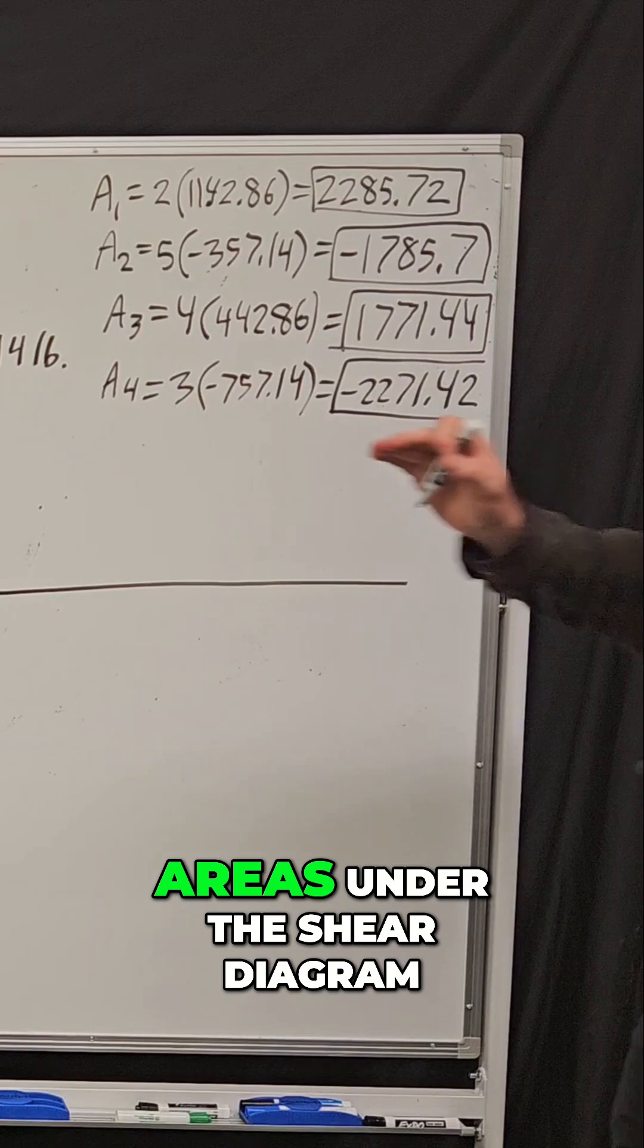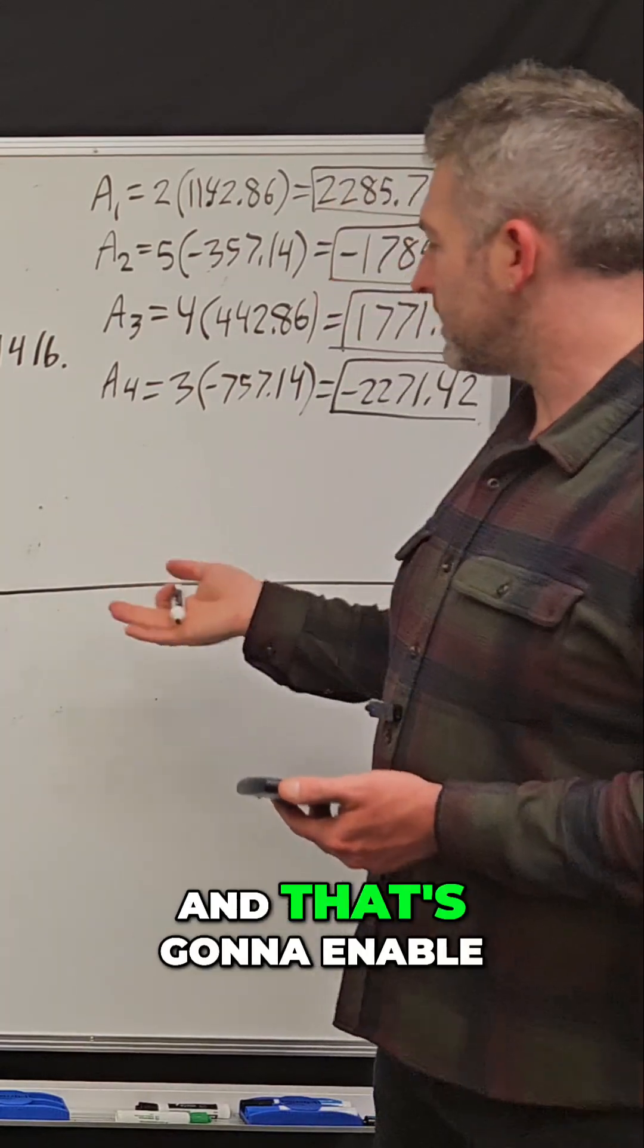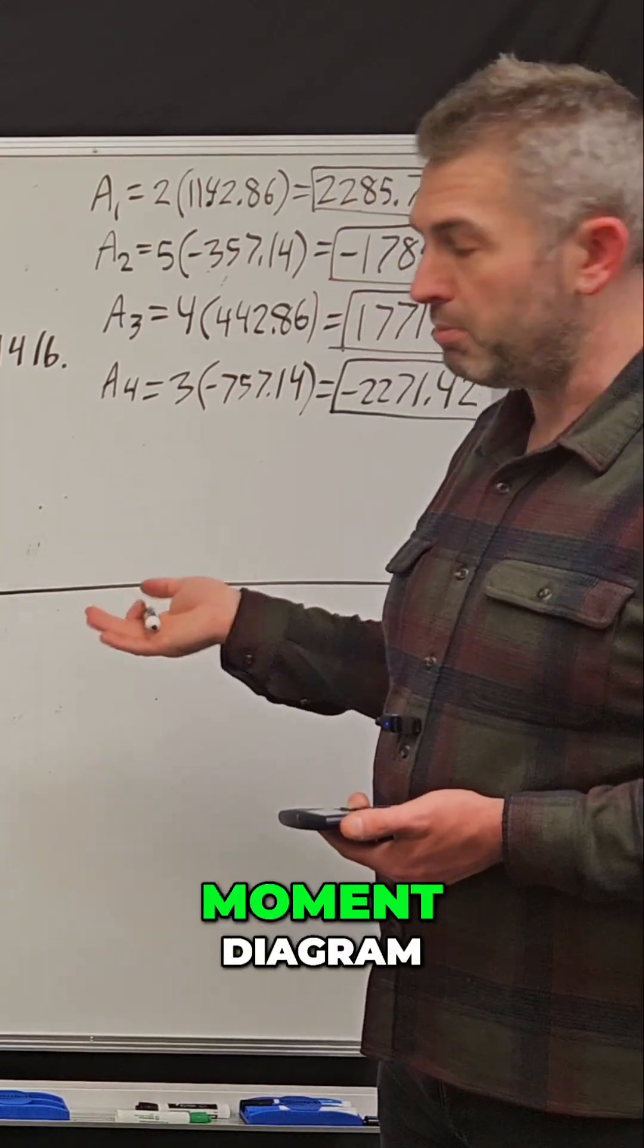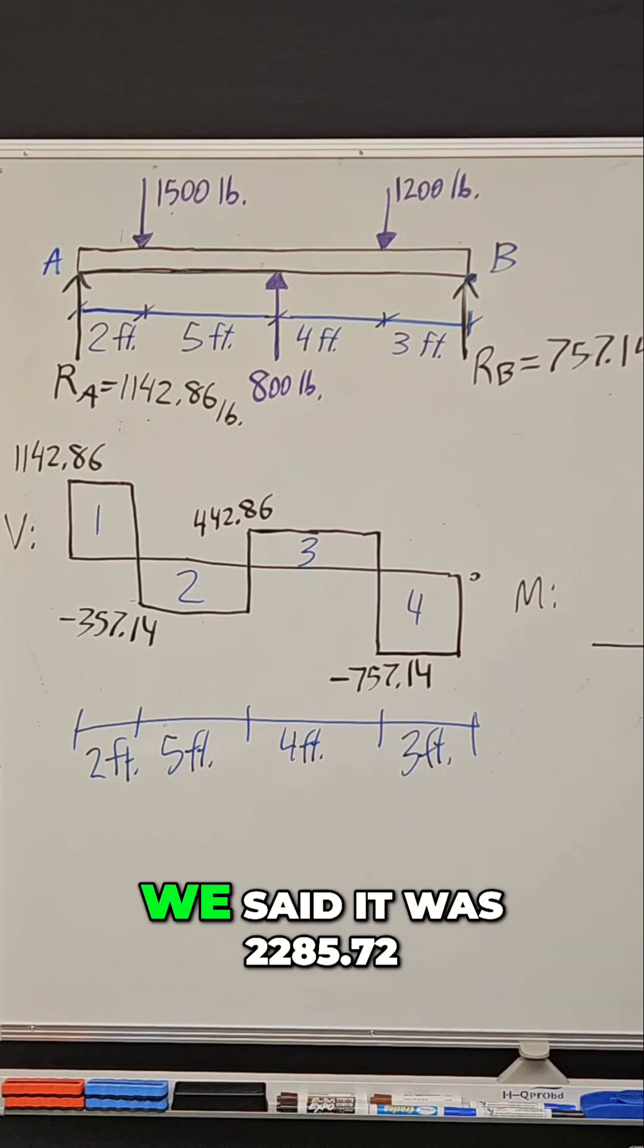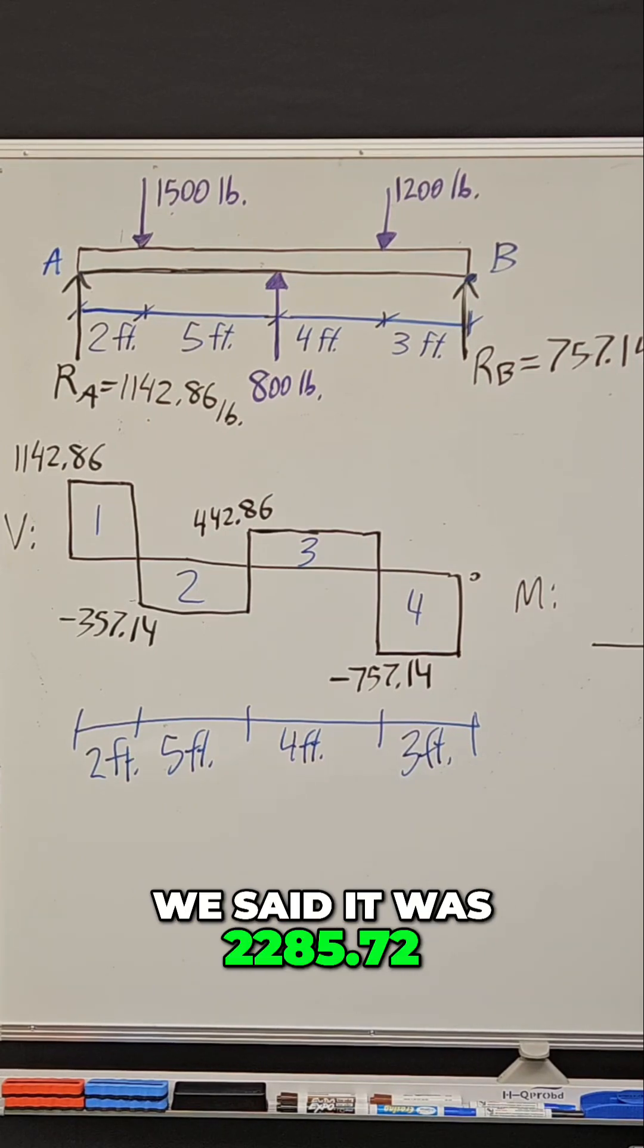So now we have all four of the areas under the shear diagram, and that's going to enable us to construct a moment diagram. Let's start with area one. We said it was 2285.72.